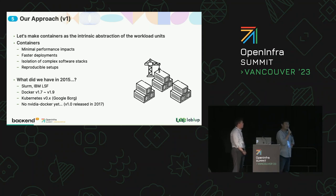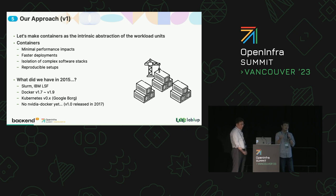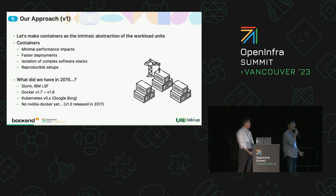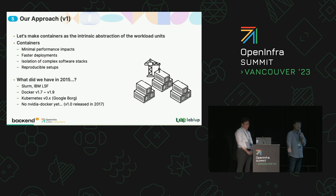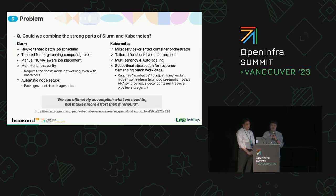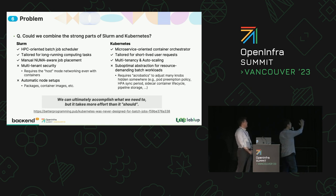We tried to solve this problem back in 2015 — about eight years ago — because we got addicted to containers and Docker. We tried to make a research platform on Docker. At the time, Slurm was widely used, Docker had just come to the public three years prior, there was no Kubernetes — it was just named as a Google project — and of course there were no NVIDIA container or GPU-specific container systems yet. So we tried to combine the pros of Slurm and Kubernetes to solve the problem using the good points of each system.